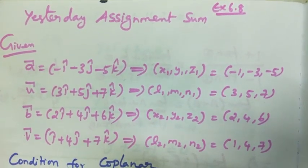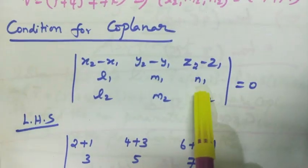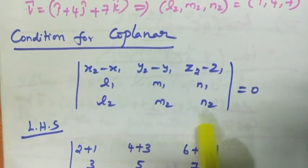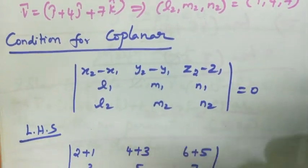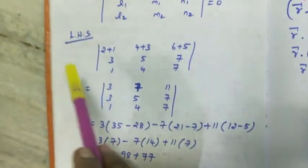Condition for coplanar: determinant of x2 minus x1, y2 minus y1, z2 minus z1, l1, m1, n1, l2, m2, n2 equal to zero. Now, if we prove the left hand side, left hand side determinant.